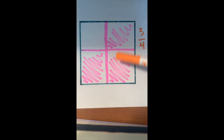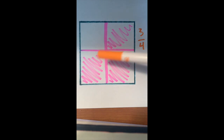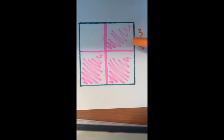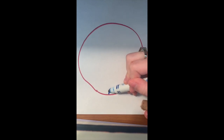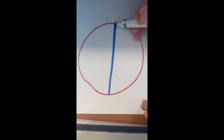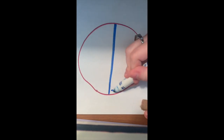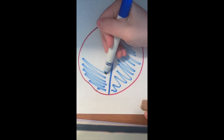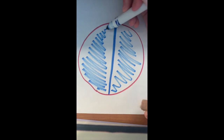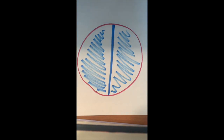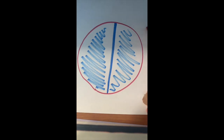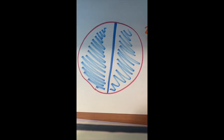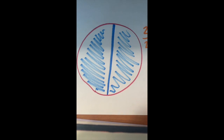Let's look at this circle. If we split this circle into two pieces and we color in both of those pieces — color in two of the pieces — what fraction of those two pieces is colored in? It would be two over two, and that's because two of the two pieces is colored in. Two over two is also equal to the whole. The whole was the circle, and if you colored in the whole circle, that's the same thing as what you did.